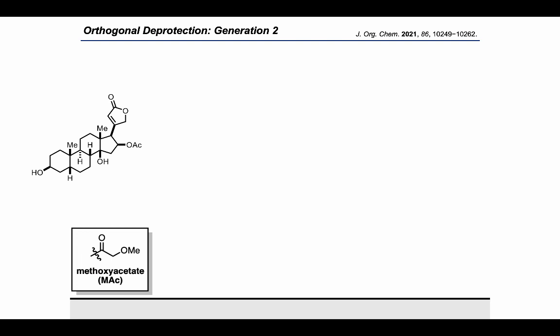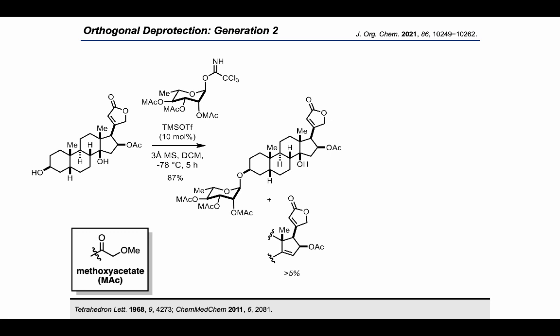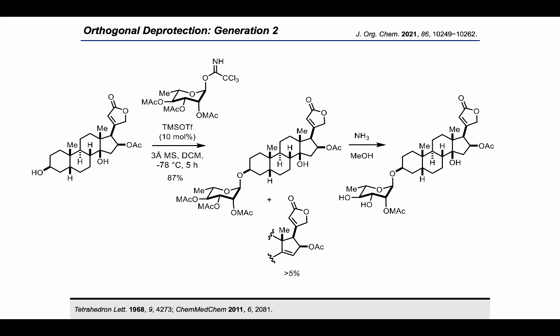Based on these considerations, the reaction of oleandrogenin with the MAC-protected L-rhamnoside trichloroacetimidate was accomplished to provide the alpha-L-rhamnoside product in 87% yield as the only observable isomer, again with minor amounts of beta-C16 hydroxyl elimination. The glycoside was then subjected to various basic and mildly acidic conditions for deprotection. Treatment with a saturated solution of ammonium in ethanol led to the selective formation of the monoprotected glycoside.